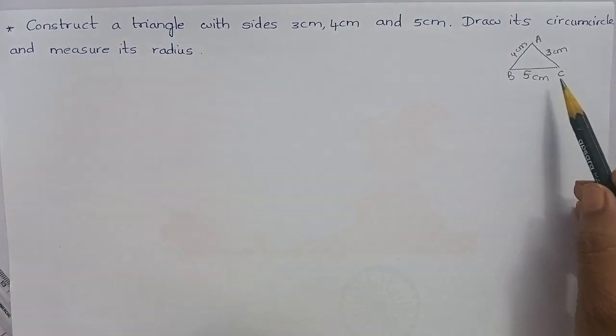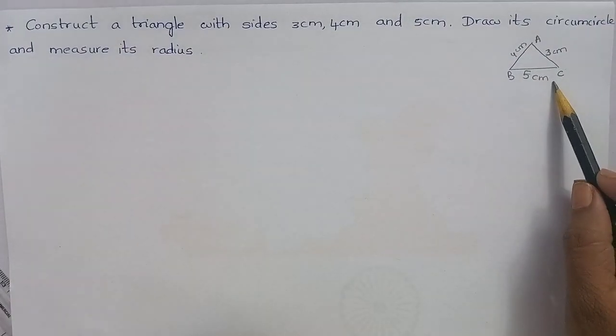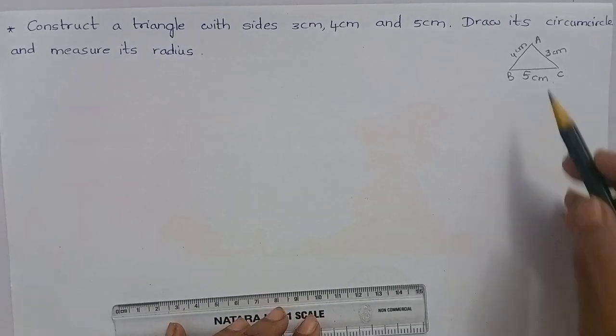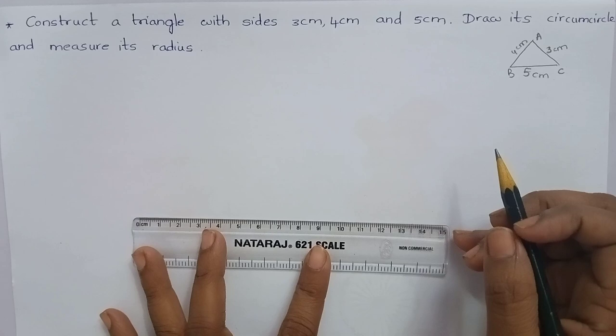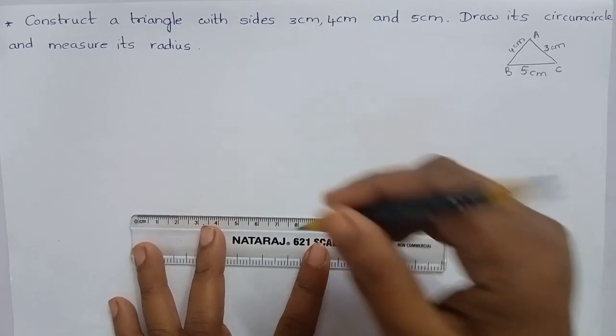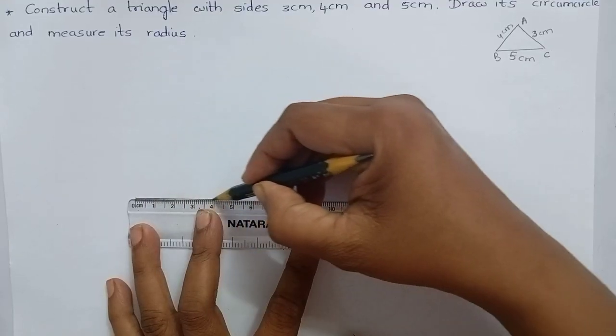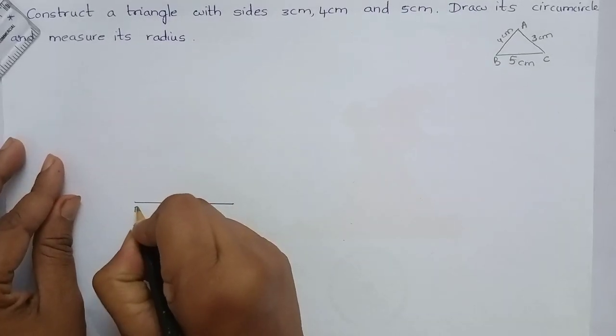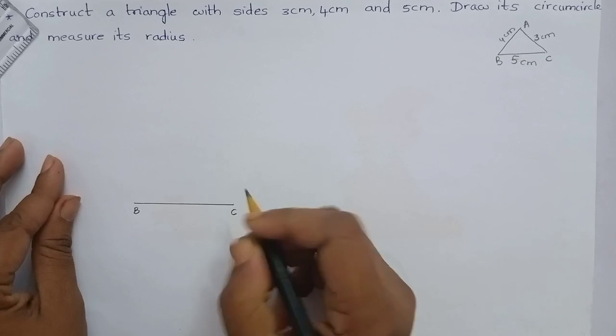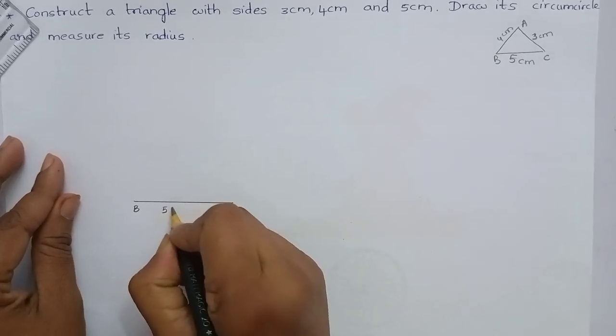Let's draw a triangle according to this measurement. Draw BC equal to 5 cm. Mark 5 cm using the ruler. Name it as BC.